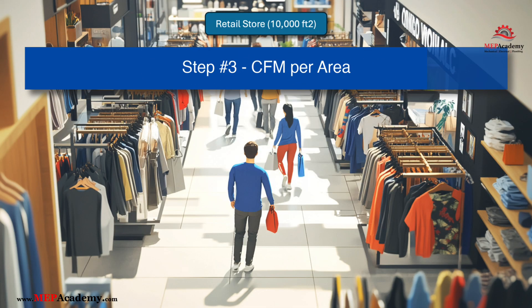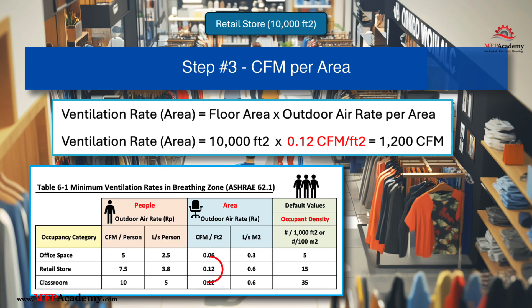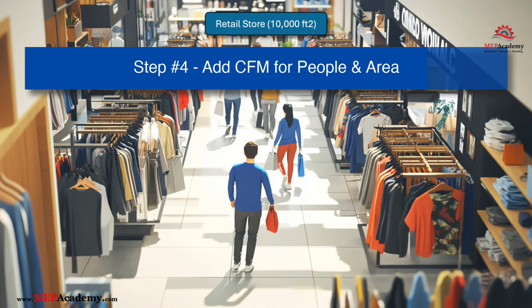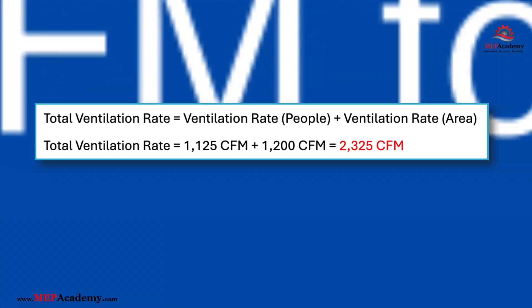Step 3: Ventilation rate (area) = 10,000 sq ft × 0.12 CFM per sq ft = 1,200 CFM. Step 4: Total ventilation rate = 1,125 CFM (people) + 1,200 CFM (area) = 2,325 CFM. Therefore, for this retail store, the required outdoor air ventilation rate is 2,325 CFM.